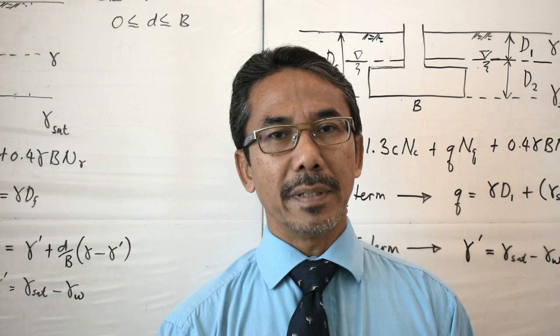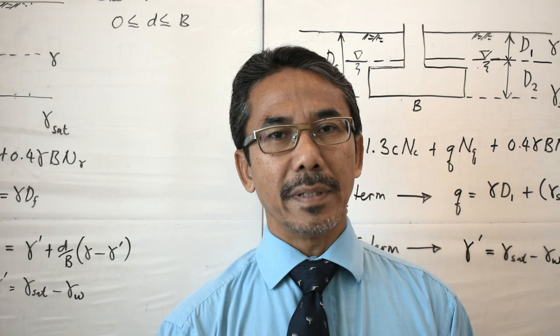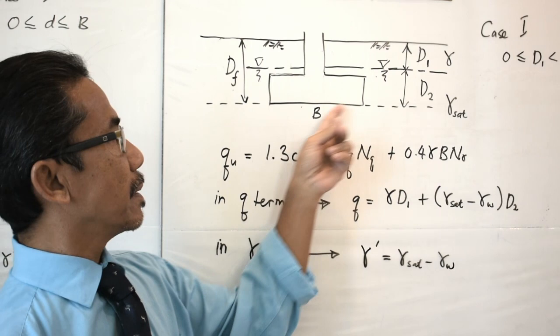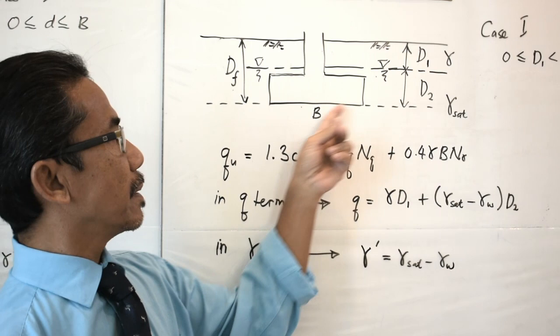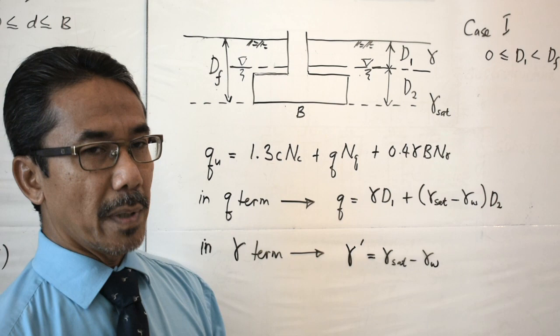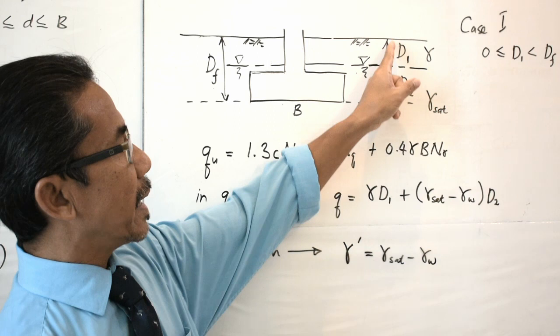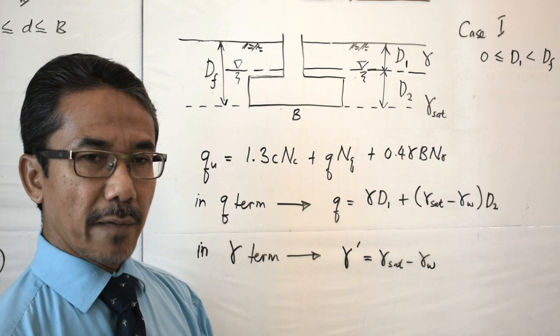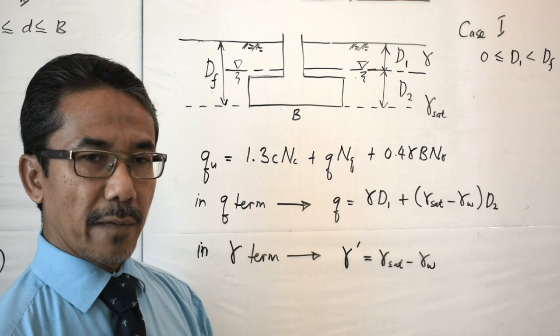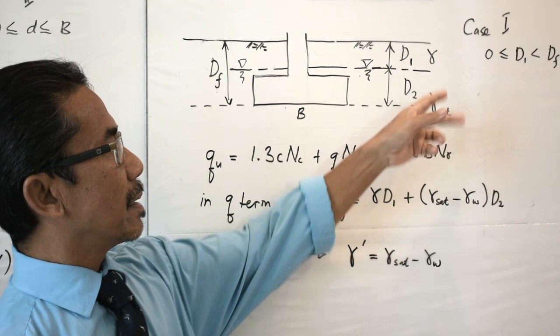There are three cases that we have to consider depending upon the location of the groundwater table. Let's take a look at this diagram. We have a footing with the depth of the footing df and the width of the foundation is B. The groundwater table is located between the ground surface and the base of the footing. The location is indicated as d sub 1, measured from the ground surface to the water level, and d sub 2 is the distance from the water level to the base of the footing.